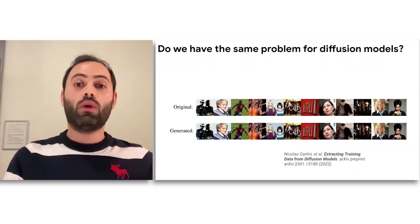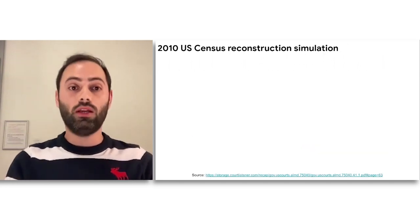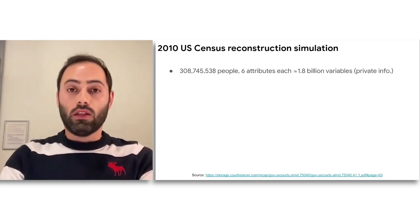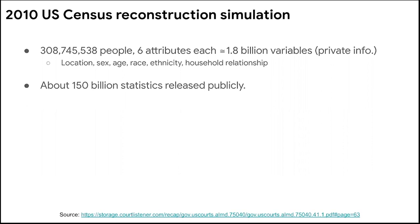We talked a lot about image models and language models — does this happen with structured data? In fact, the US Census Bureau, which releases statistics about 300 million plus people across many variables — we're talking 1.8 variables — all structured data in contingency tables covering location, sex, age, race, ethnicity, and so on. In total, we have about 100 billion statistics released publicly in every census.